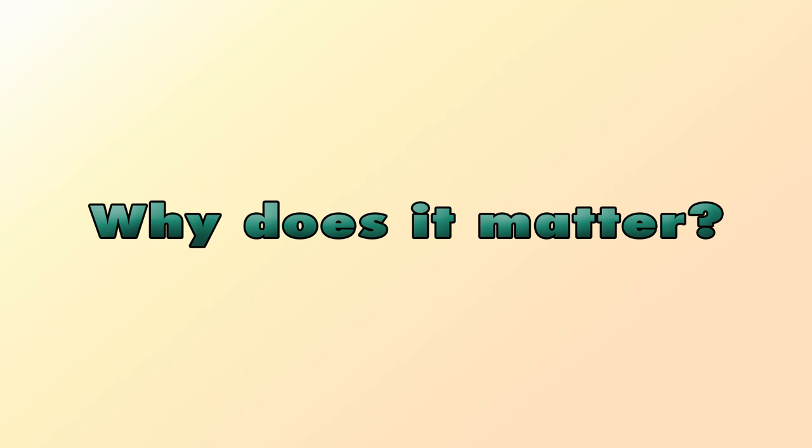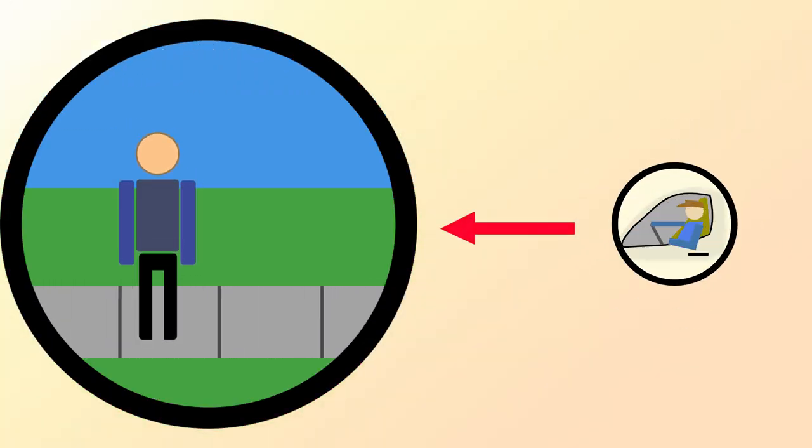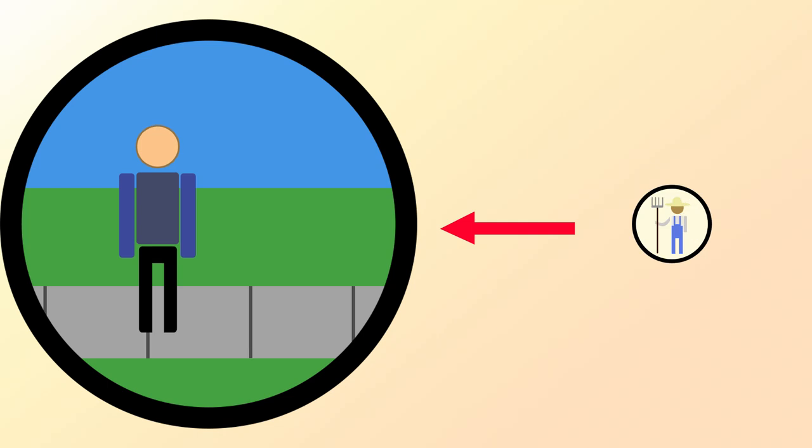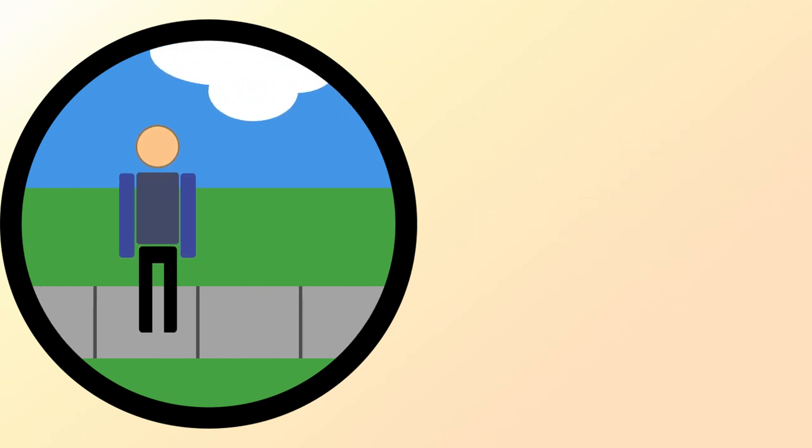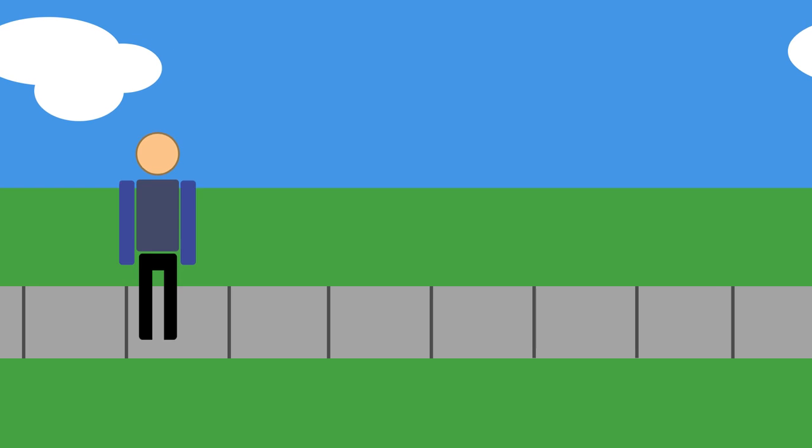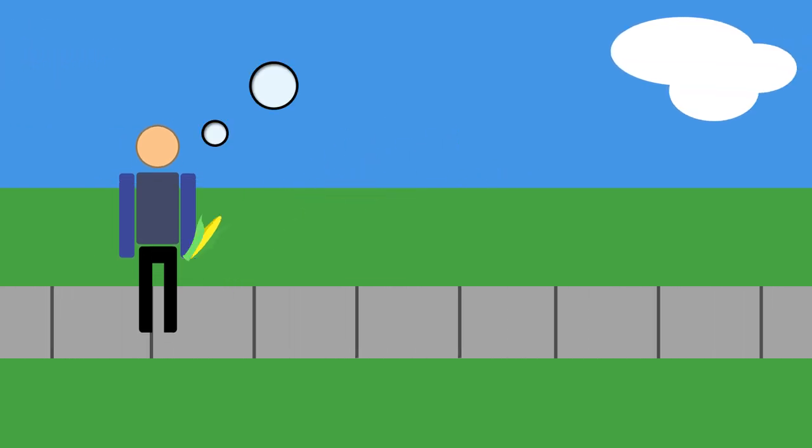But why does it matter if John does not see this interdependence? Are there any consequences if John keeps on thinking that he's independent? Well, if John can't see how he depends on the store employees, the truck drivers, the warehouse workers, the farmers, and the earth, then he won't think about their well-being or how their well-being affects his. As long as John gets his corn, that's all that matters to him.